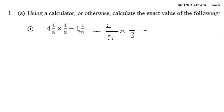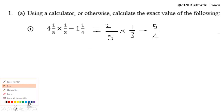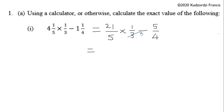This is also a mixed number so we convert to an improper fraction: 1 times 4 is 4, plus 1 is 5, so 5 over 4. Now we simplify — 3 will go into itself once and it will go into 21 seven times, so we are left with 7 over 5. So 7 over 5 times 7 times 1 is 7, and 5 times 1 is 5, giving us 7 over 5.